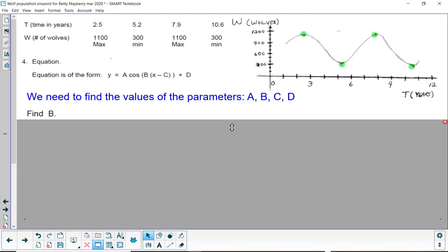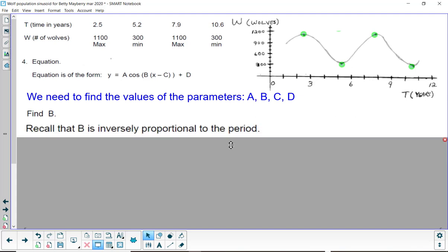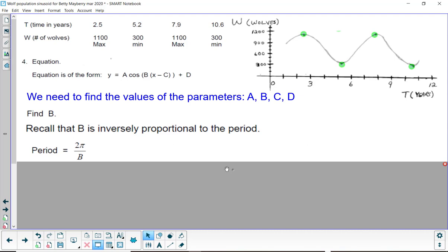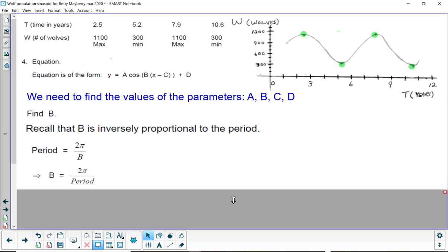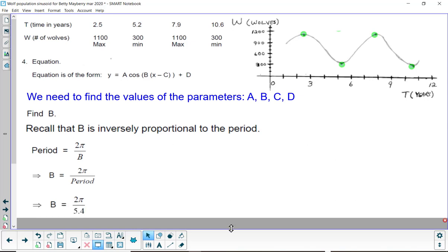To find B, what do you know about B? B is inversely proportional to the period and the normal period of the sine function is 2 pi. So, B is equal to 2 pi divided by the period, that inverse relationship. And we found the period to be equal to 5.4. Notice I'm not going to simplify this fraction because I'd like to see that 5.4 show up.